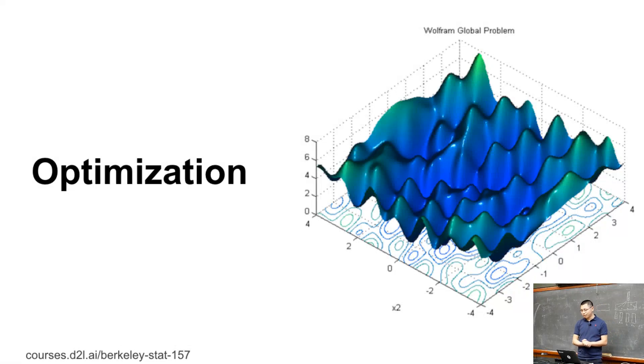This is the last unit for this class: optimization. Optimization is one of the most popular topics in machine learning before deep learning. For me, I submitted to NeurIPS three times, and only the optimization paper got accepted. But in the deep learning world, optimization is not so popular because we do non-convex optimizations.